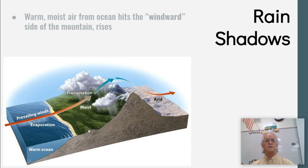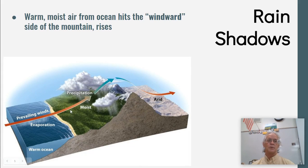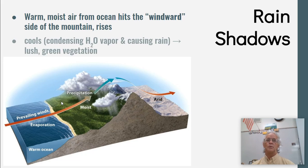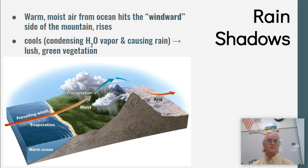So what is a rain shadow? Warm, moist air comes in from the ocean and hits the windward side — the side where the wind hits. The warm, moist air rises, and as it rises it cools off, therefore the water condenses, causing rain. On this side of the mountain — say Seattle — it's going to be very moist.